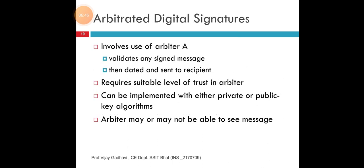Arbitrated digital signatures involve the use of an arbiter A, who validates any signed message, dates it, and sends it to the recipient. The destination requires a suitable level of trust. This can be implemented with either private or public key algorithms. The arbiter may or may not be able to see the message.